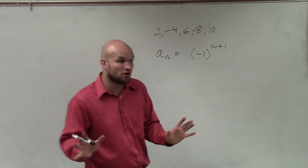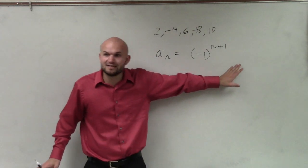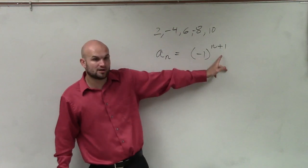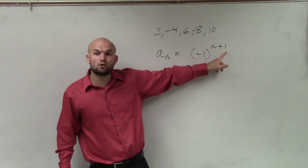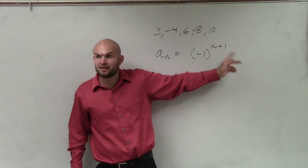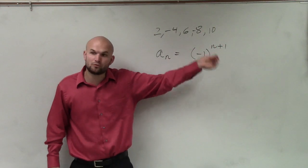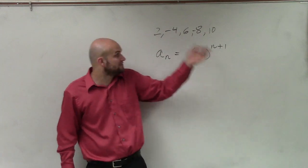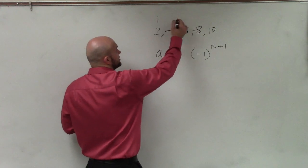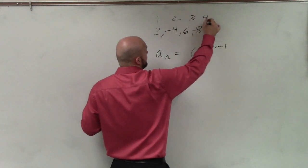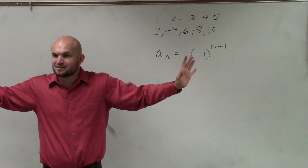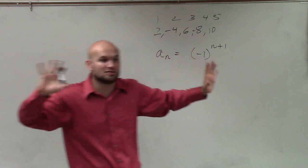I haven't figured out the full formula yet, but I've at least taken care of the alternating signs. Because now, when I do n equals 2, 2 plus 1 is 3. Negative 1 raised to an odd power of 3 is going to be negative 1 — meaning whatever my rule is, I'm going to multiply it by a negative, which will make my second term negative. Remember, this is your first term, second term, third term, fourth term, fifth term. So now I've created my alternating signs.